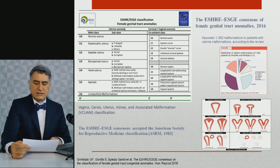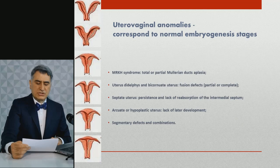Surgical treatment was performed in accordance with anomaly type, patients' symptoms, and concomitant pathology by European Consensus Guidelines. The European Consensus is based on the classification of the American Society for Reproductive Medicine, which provides a precise diagnosis and appropriate surgical treatment.